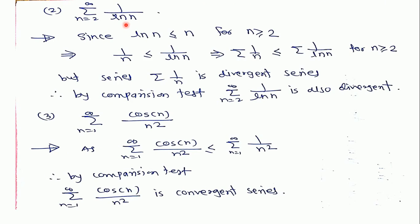See the second series: sum from n equals 2 to infinity of 1/ln(n). We know that ln(n) is less than or equal to n for all n greater than or equal to 2. Taking the reciprocal, we get 1/n is less than 1/ln(n) for all n greater than or equal to 2, which implies series 1/n is less than or equal to series 1/ln(n) for all n greater than or equal to 2. We know that 1/n is a p-series with p less than 1, so it is a divergent series. Therefore by the comparison test, series 1/ln(n) is also divergent.